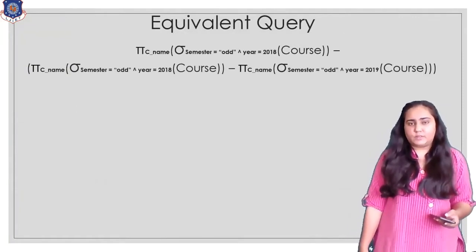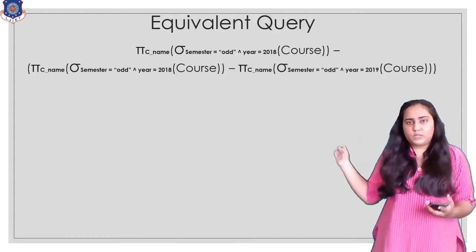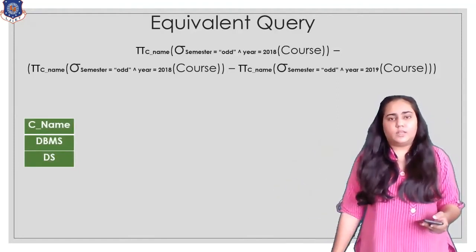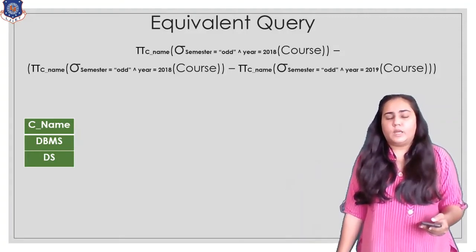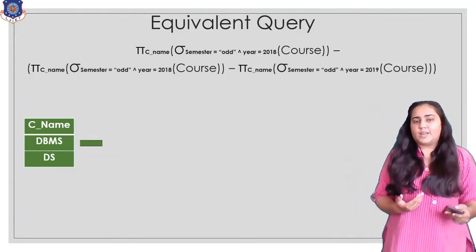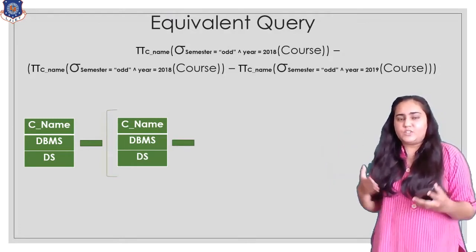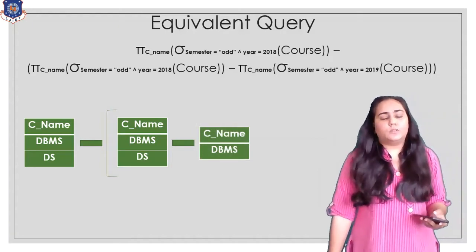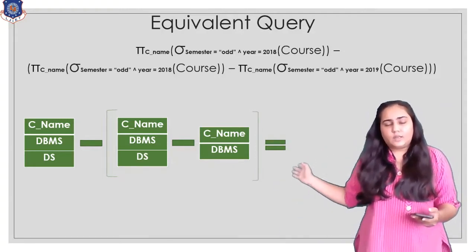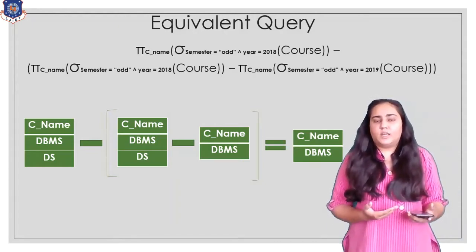You can write an equivalent query using set difference (minus), but when you do so you have to repeat the query three times with different conditions, which increases the size of the query. The first query fetches all courses from odd 2018 — DBMS and DS — from which we subtract the courses taught in odd 2019. The result inside the bracket gives only DS, and then DS is subtracted from the outer query, resulting in DBMS — the same result as intersection.